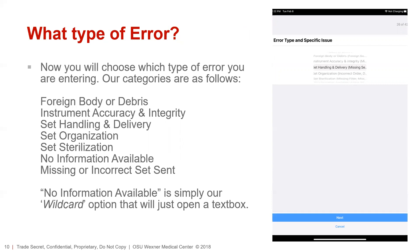Then you'll be asked to identify what type of error you are entering. We have our most common error types on this wheel: foreign body or debris, instrument accuracy and integrity, set handling and delivery, set organization, set sterilization, no information available, and missing or incorrect set. The no information available option is our wildcard option that will open up a text box for any issue that doesn't fit nicely into one of the other descriptions.